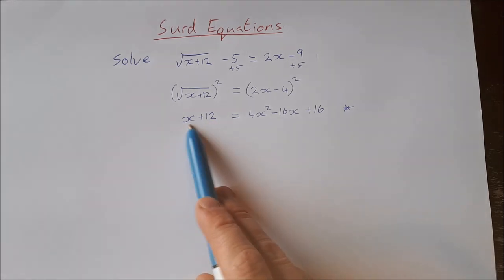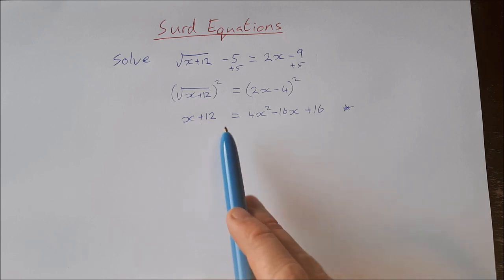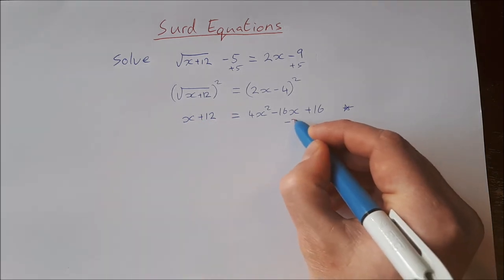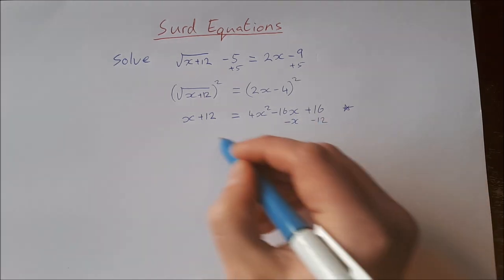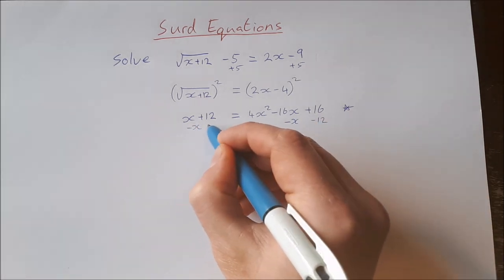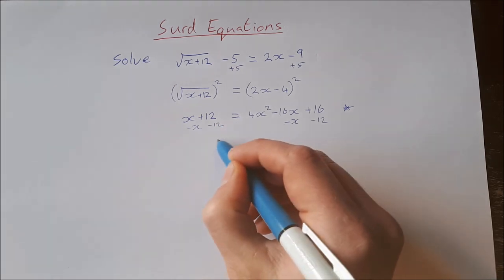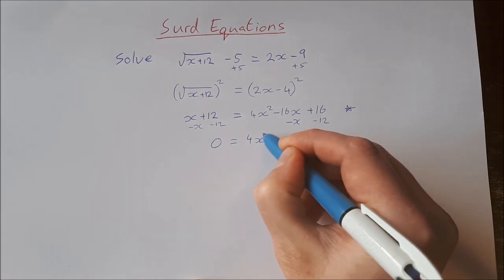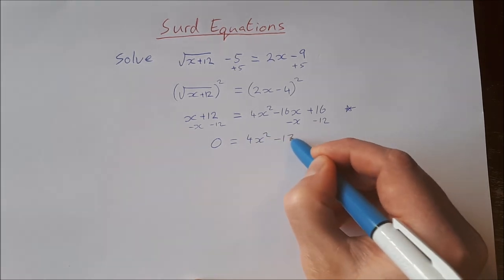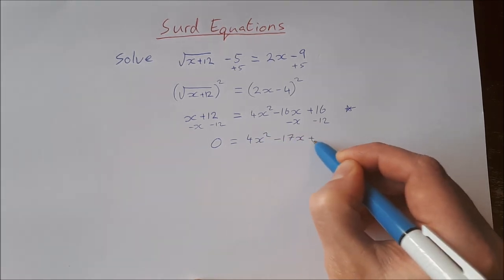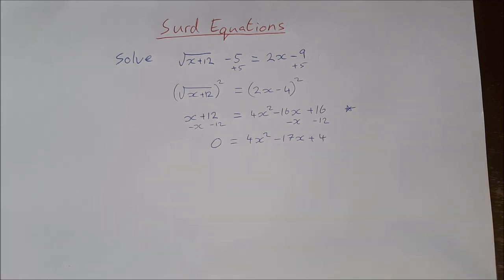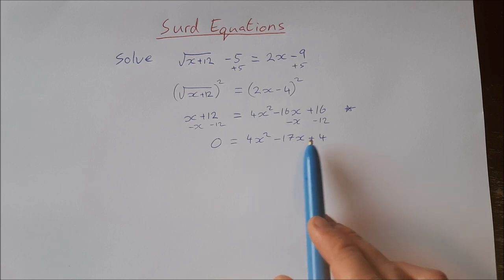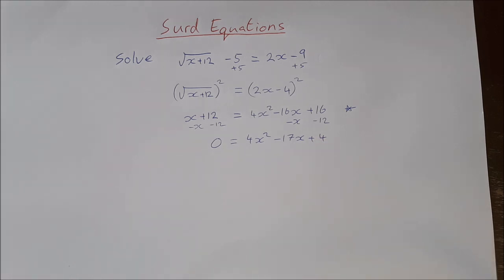At this stage we're going to tidy everything up. I'm going to take away x from both sides and take away 12 from both sides. On the left you get zero, and on the right-hand side you get 4x squared minus 17x plus 4.